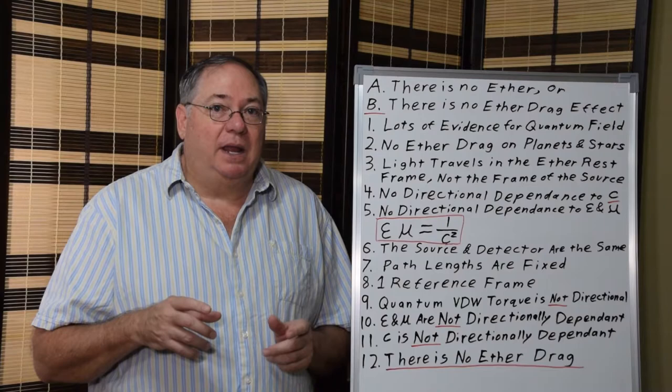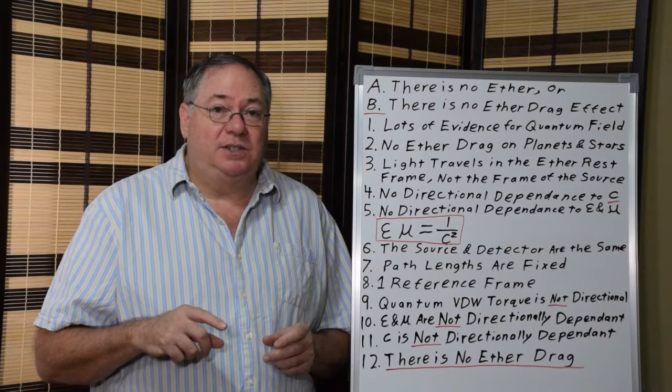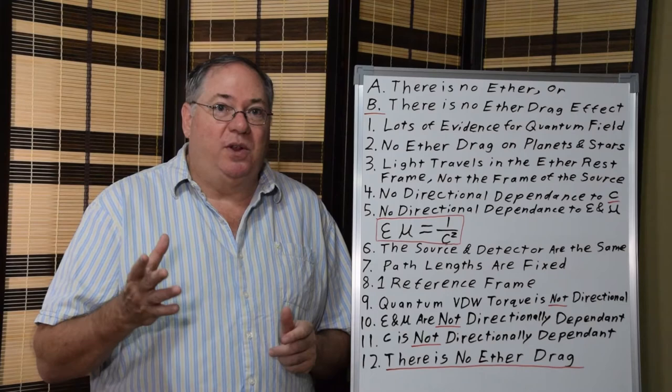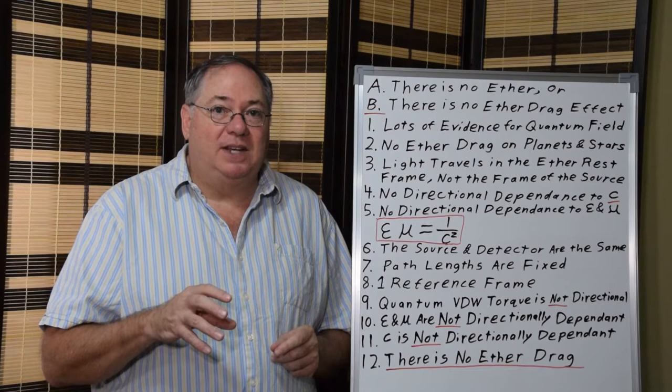But in terms of this experiment, the quantum Van der Waals torque is uniform in space and it does not have a directional dependence. So the electric and magnetic constants don't have a directional dependence, and the speed of light doesn't have a directional dependence. And that's how electromagnetically Maxwell's conjecture was totally wrong. There's just no directional dependence because the quantum field's torque and electromagnetic constants don't have a directional dependence.